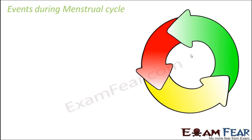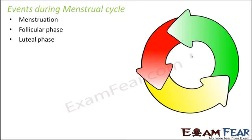The menstrual cycle, as the name says, is a cycle — a series of events that repeats. The events which constitute the menstrual cycle are: first menstruation, followed by the follicular phase, which is again followed by the luteal phase, and then the cycle keeps repeating. So it goes: menstruation → follicular phase → luteal phase → menstruation → follicular phase → luteal phase, and so on. We will now understand what each of these phases means, starting with menstruation.